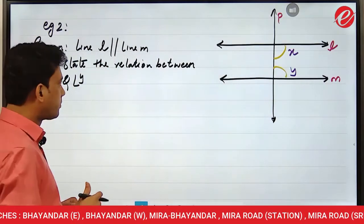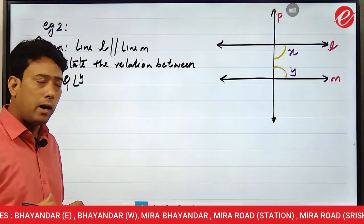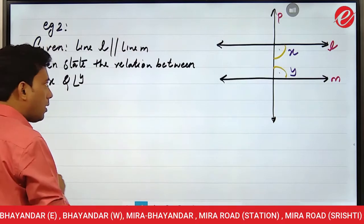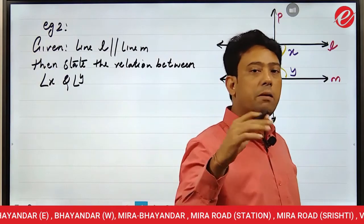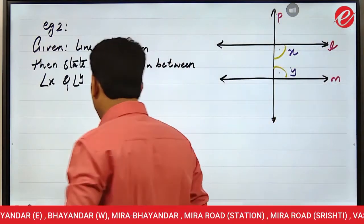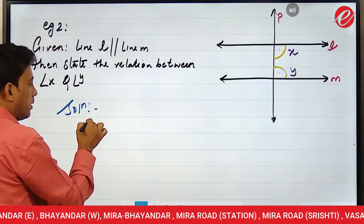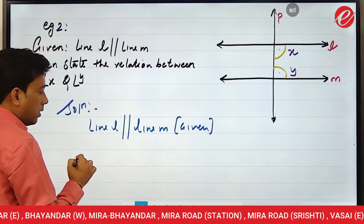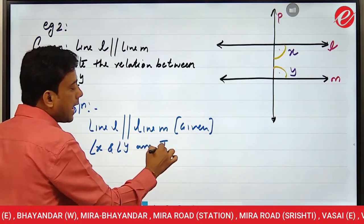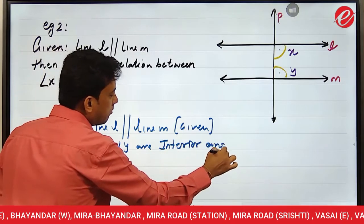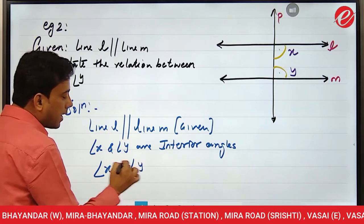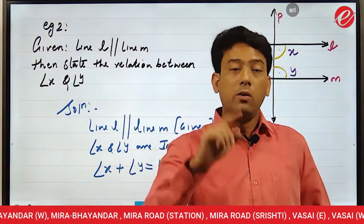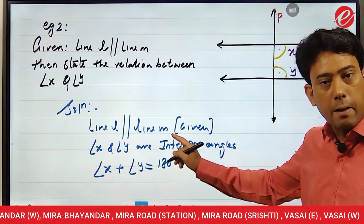Example 2: Line L and line M are parallel, and line P is a transversal. The angles X and Y appear in a C-shape. What is the relation between X and Y? Solution: Line L is parallel to line M — given. Angle X and angle Y are interior angles because they are in a C-shape. Therefore their sum will be 180 degrees — they will be supplementary. When lines are parallel, C-shape angles total 180.